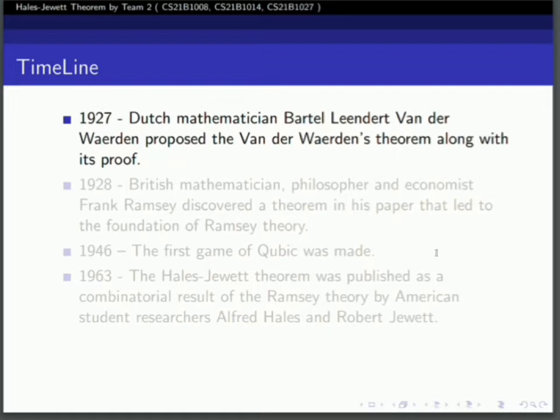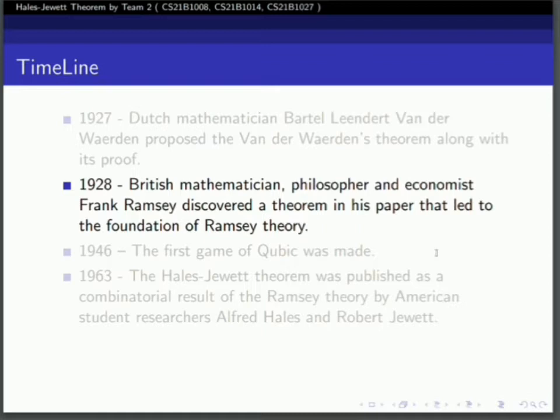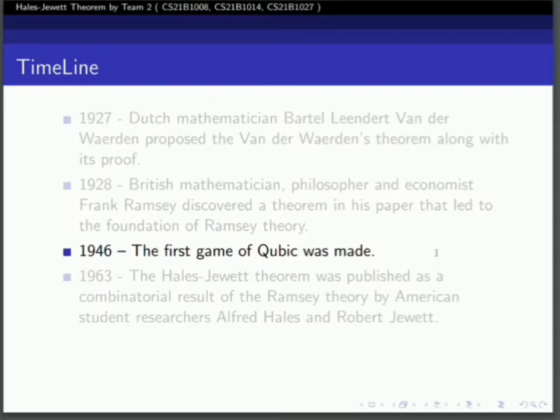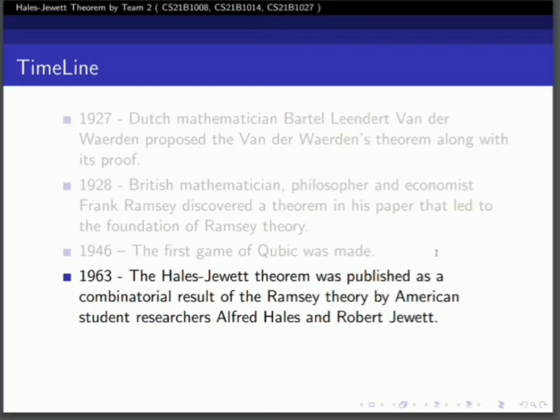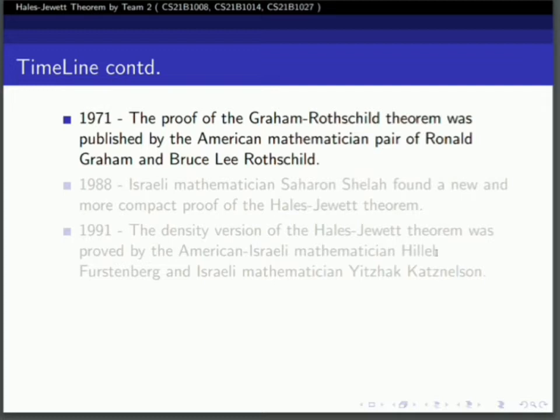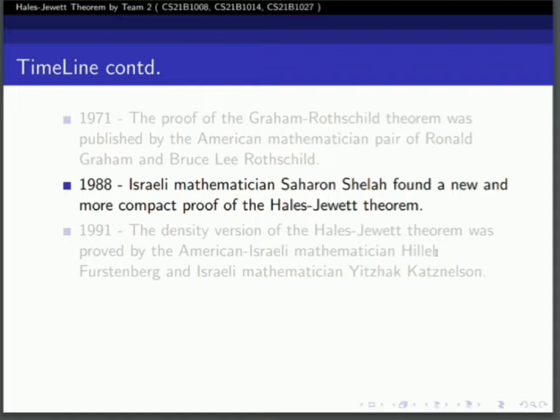Now let's look at the timeline concerning the Hales-Jewett theorem. In 1927, Dutch mathematician van der Waerden proposed the van der Waerden theorem. In 1928, Frank Ramsey discovered a theorem that led to the foundation of Ramsey theory. In 1946, the first game of cubic was made. Finally, in 1963, the Hales-Jewett theorem was published as a combinatorial result of Ramsey theory by Alfred W. Hales and Robert L. Jewett. In 1971, the Graham-Rothschild theorem was published, and in 1988, Israeli mathematician Saharon Shelah found a new and more compact proof.